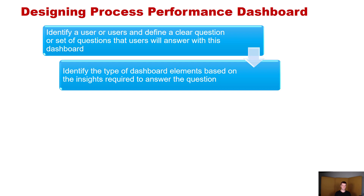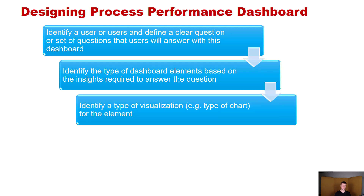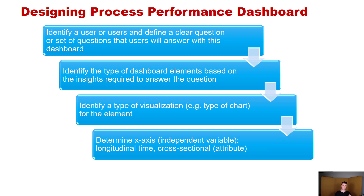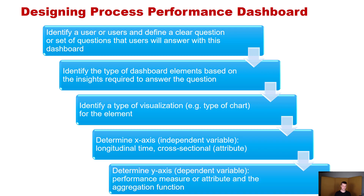The elements will be discussed in more depth in the next part of this lecture. Once we have identified the type of dashboard elements, we will identify a type of visualization — meaning the type of chart for the element or performance measure we want to represent on the dashboard. For each element, we have to determine the x-axis, which is the independent variable — for example, longitudinal time or something cross-sectional like different resources. Then we want to determine the y-axis, which is usually the dependent variable, referring to the performance measure or attribute and the aggregation function — for example, number of cases processed per resource in the business process. So these are the high-level steps.